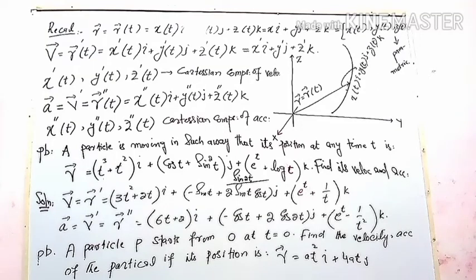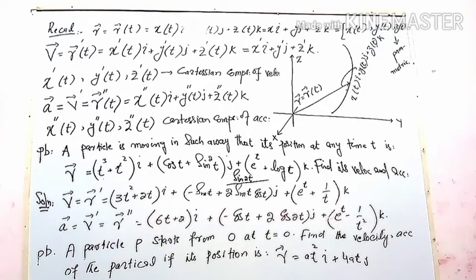The velocity and acceleration of the particle are obtained from r prime and r double prime respectively. For example, the derivative of the x-component gives 3t squared plus 2t, and the second derivative gives 6t plus 2. These are the components of the particle's velocity and acceleration.